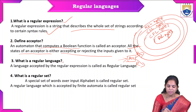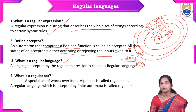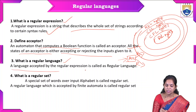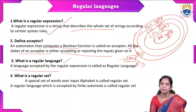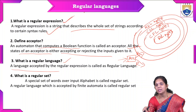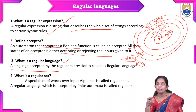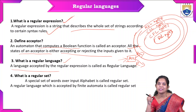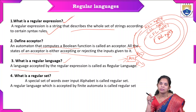Next, what is a regular language? The language represented by a regular expression is called a regular language. We generally denote the regular expression in a single line, and from that single-line representation we can form the language. With that expression, we can form the languages — all possibilities of strings — and we write that as regular languages.